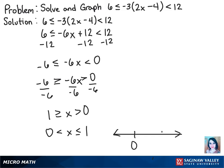And since x is greater than 0, we're going to keep the circle hollow. And then since x is less than or equal to 1, we're going to shade it in. So then x takes on the values in between the 0 and 1, including 1.